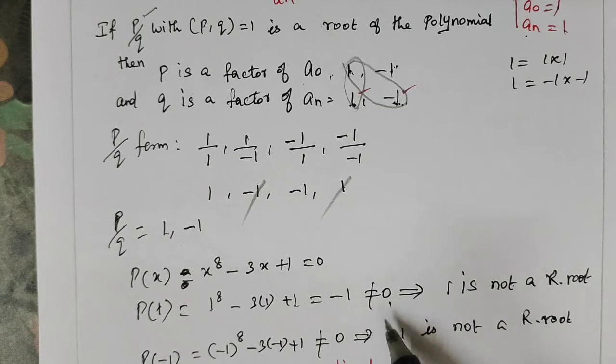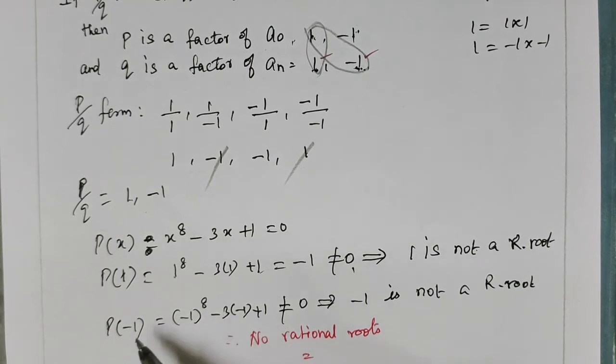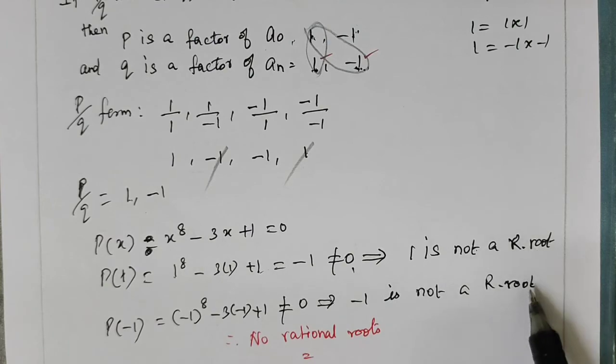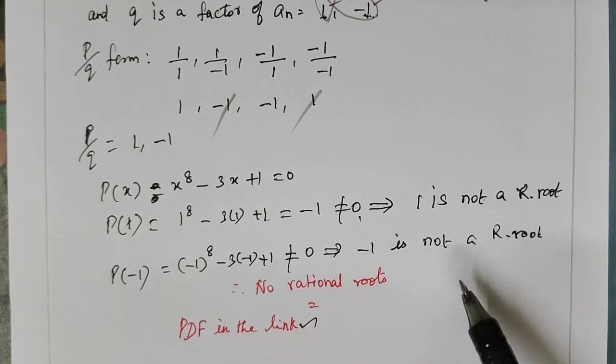So there are two rational roots. So this sum has no rational roots. The PDF is in the link in the description.